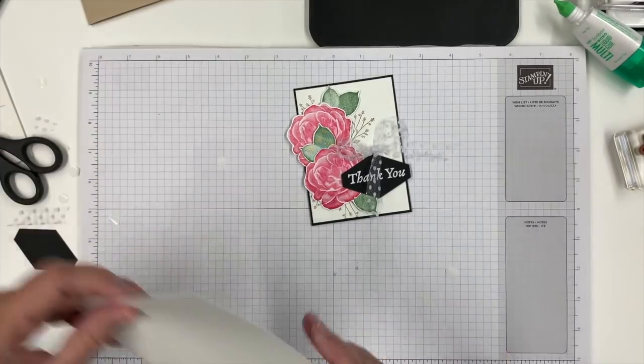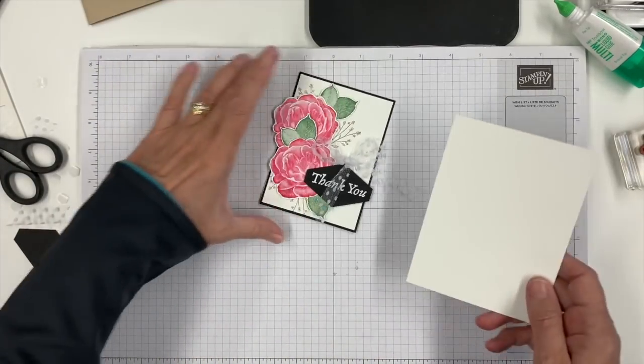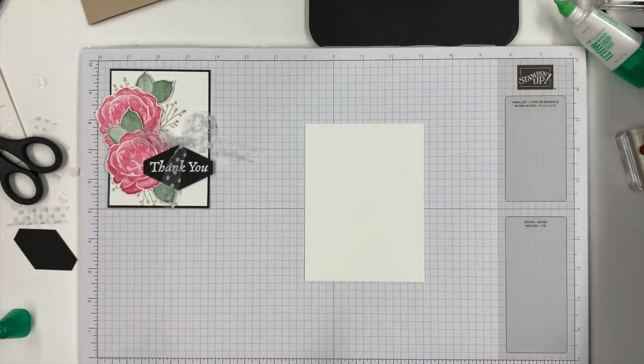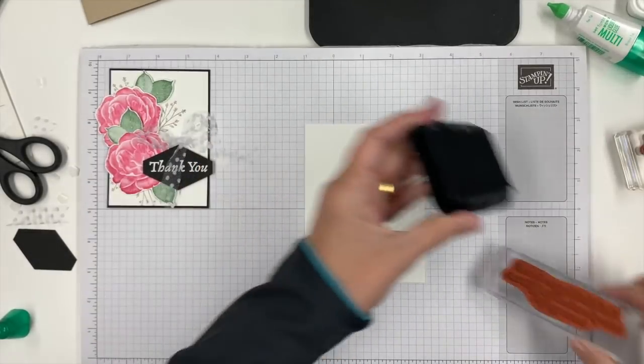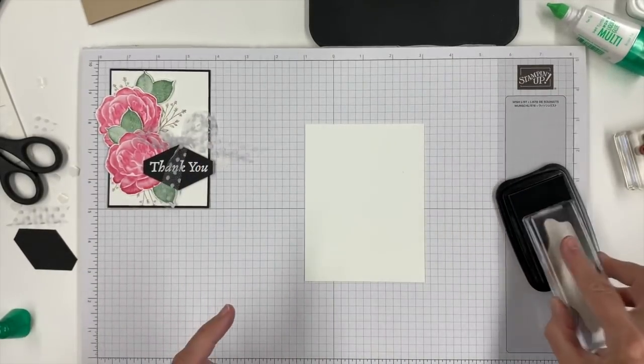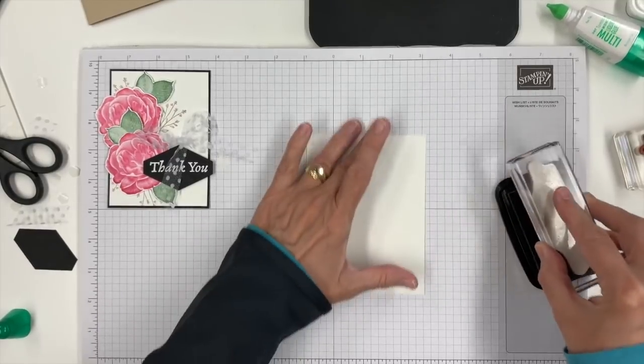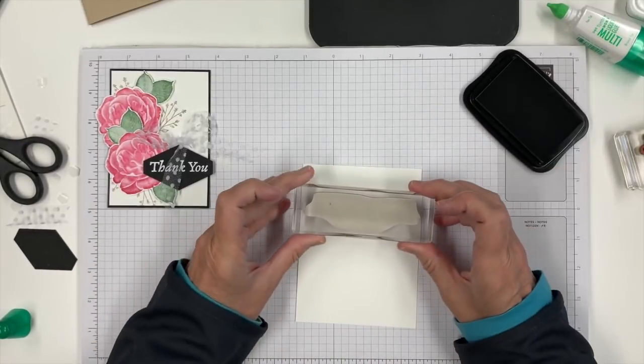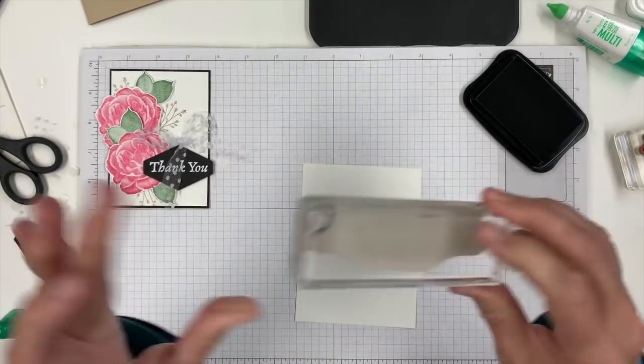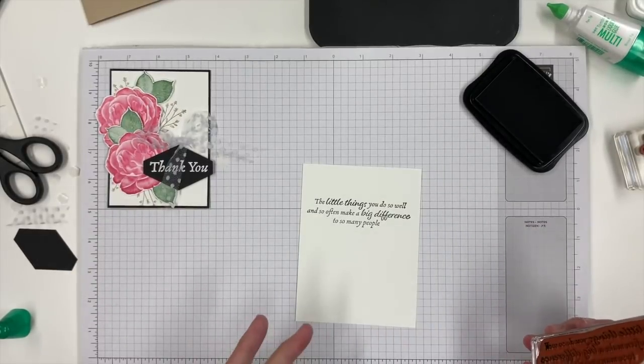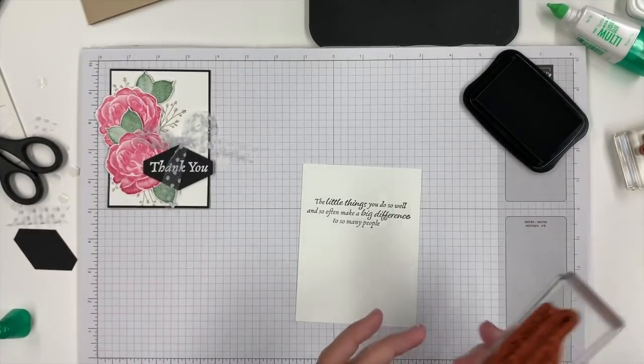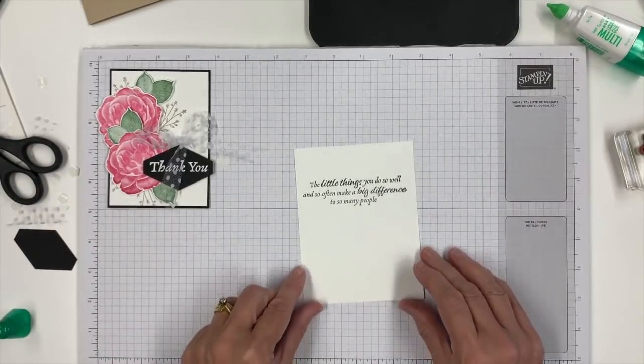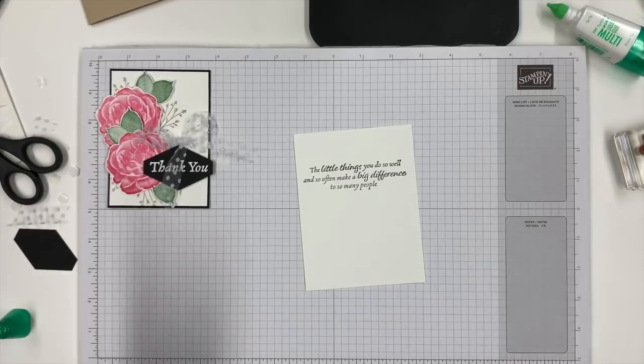I want to show you a little tip or technique called masking. This is going to be the inside of our card. Let's put our words on it first - it's a thank you card, so I grabbed one of the inside verses from our Happy Thoughts stamp set. That is probably one of the biggest reasons I love this stamp set - it has the coordinating words for inside and outside your card, and they're nice and big.